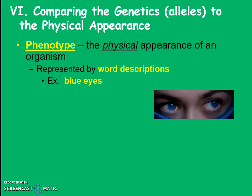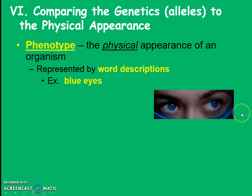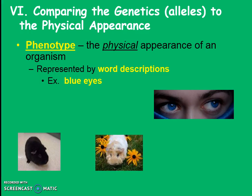To distinguish between these we have two last words — comparing the genetics and comparing the physical appearance. The physical appearance we're going to call the phenotype. Pheno sounds like physical, so phenotype means physical appearance. We represent this by word descriptions, such as for eye color this person has blue eyes. For our guinea pig example, the physical appearance is black versus white — that's phenotype.